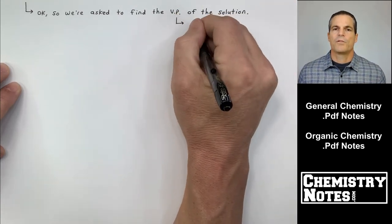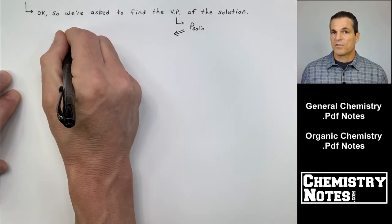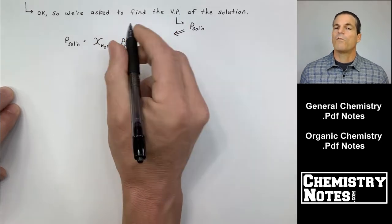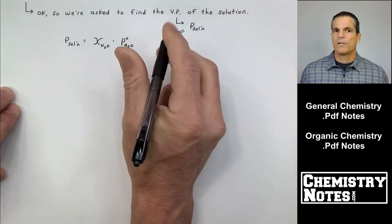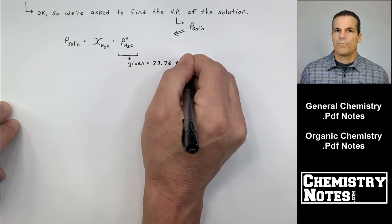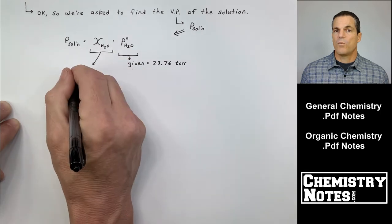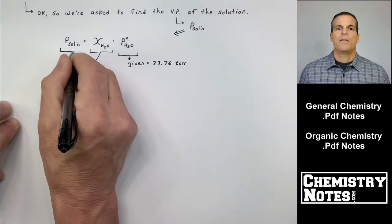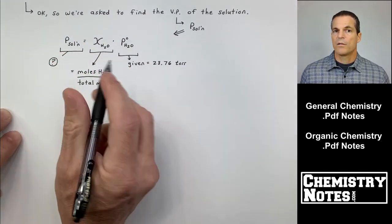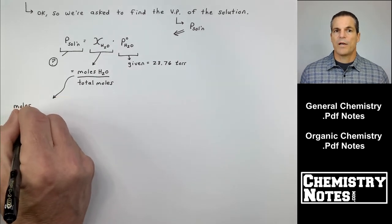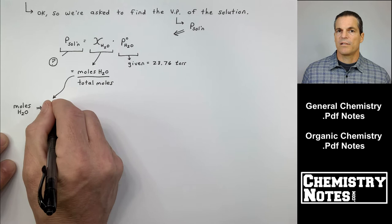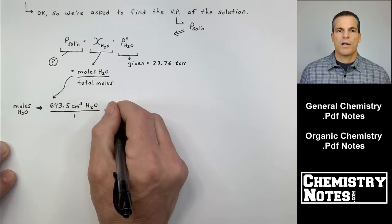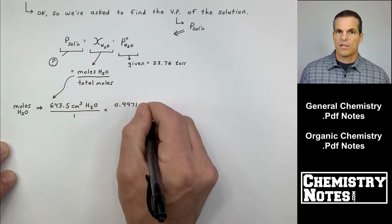We're asked to find the vapor pressure of the solution. So we're looking for P_solution. And we know that P_solution is equal to the mole fraction of water, the solvent, times the vapor pressure of pure solvent, water. And the vapor pressure of water was given to us, 23.76 torr. So I'm recording that down. And then I have to find the mole fraction of water. If I find the mole fraction of water, I can just multiply it by 23.76 torr and I'll get my answer to the vapor pressure of solution or P_solution. So how do I find moles of water? How do I find the total moles? And then how do I get the mole fraction?